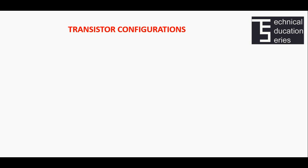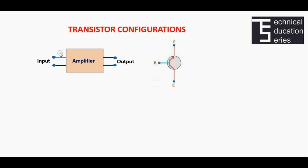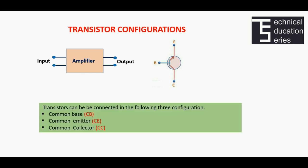Transistor configurations. The most common application of a transistor is as an amplifier. An amplifier requires two terminals at the input and two terminals at the output. When using a three-terminal device such as a transistor as an amplifier, one of its three terminals must be common to both input and output. Accordingly, a transistor can be configured in three ways: common base, common emitter, and common collector.